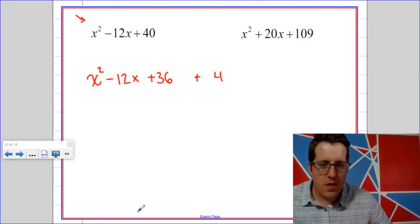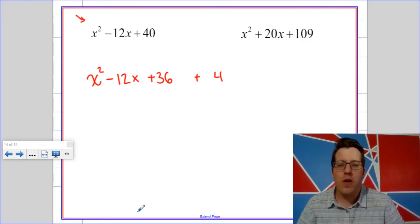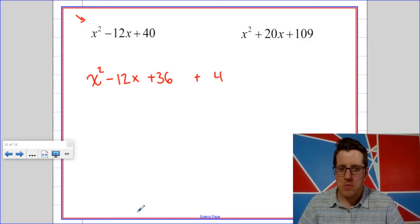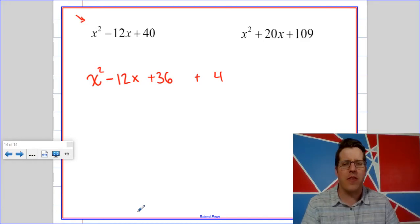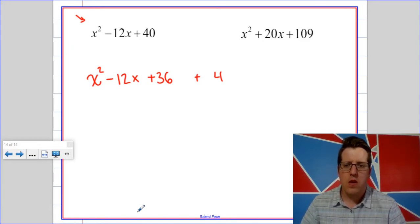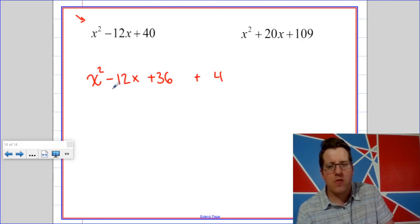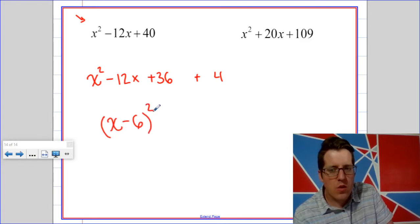If you've taken an algebra class or pre-calculus class, at some point you've come across the idea of completing the square. So I actually uncompleted the square or completed the square by splitting it apart, however you want to think about that. But I took part of that expression and wrote it as a perfect square. So this is the perfect square trinomial for x minus six quantity squared.